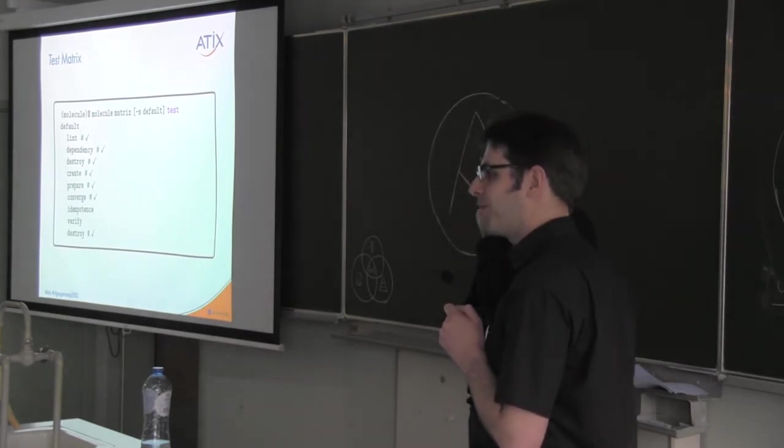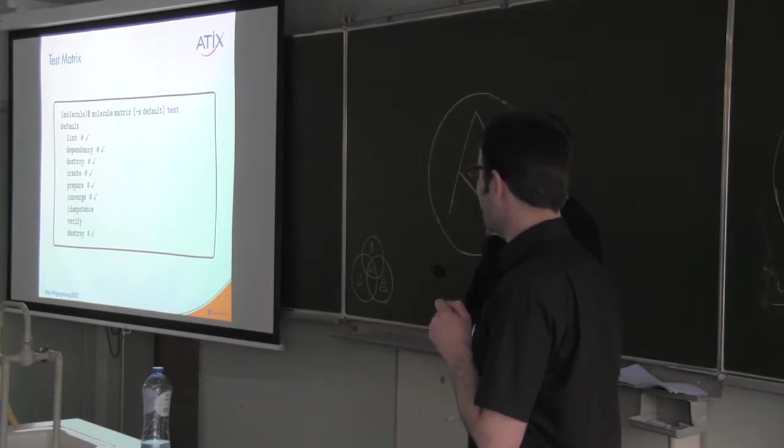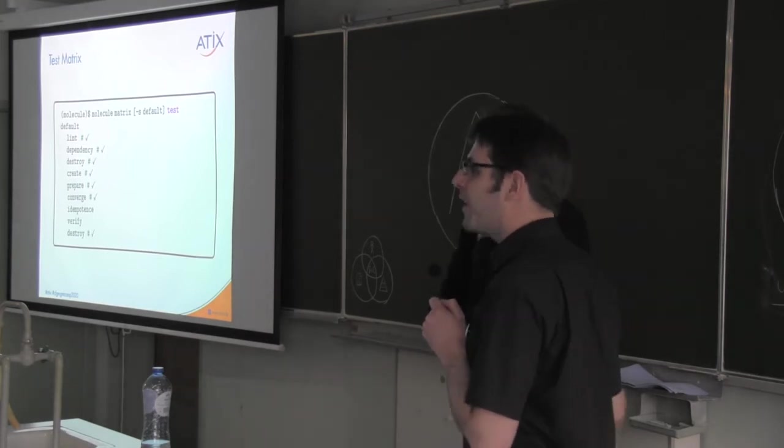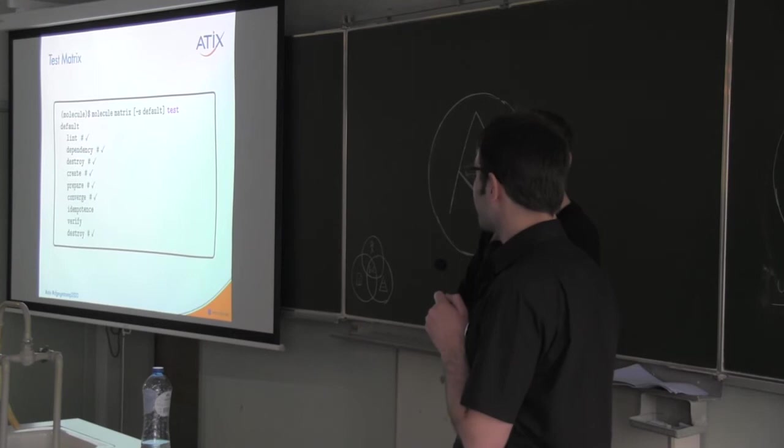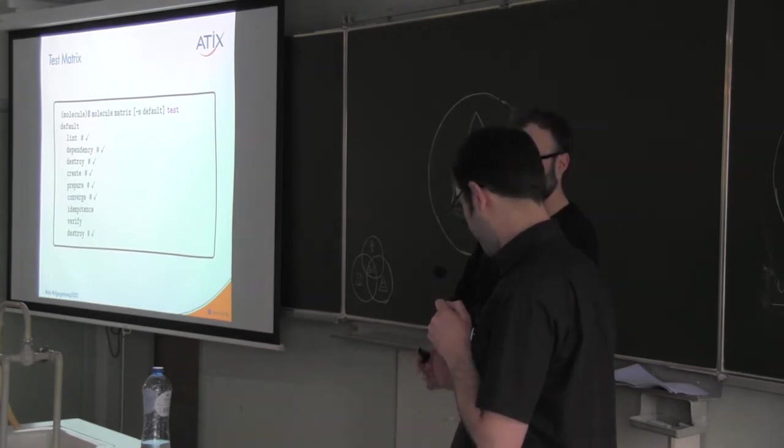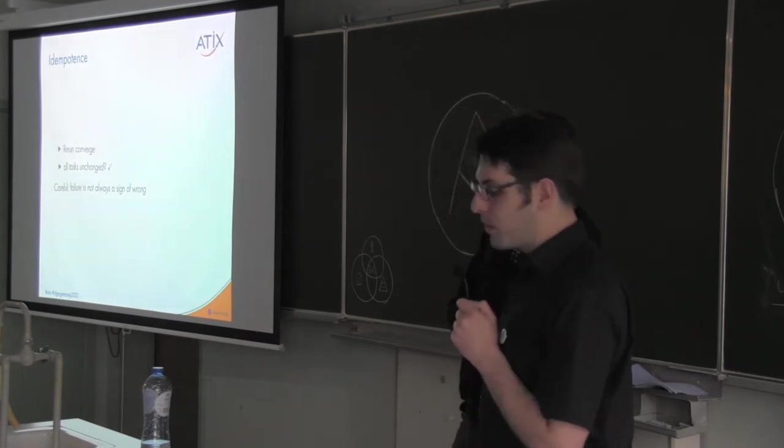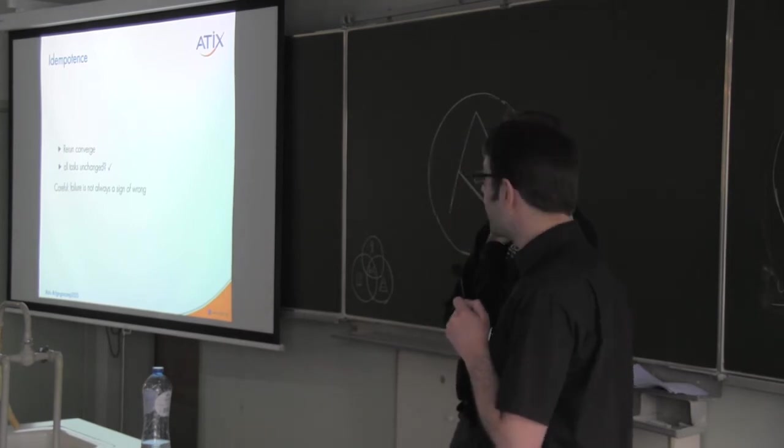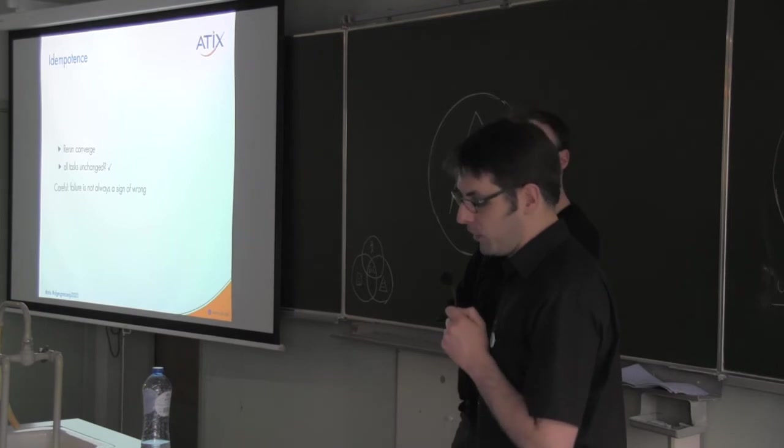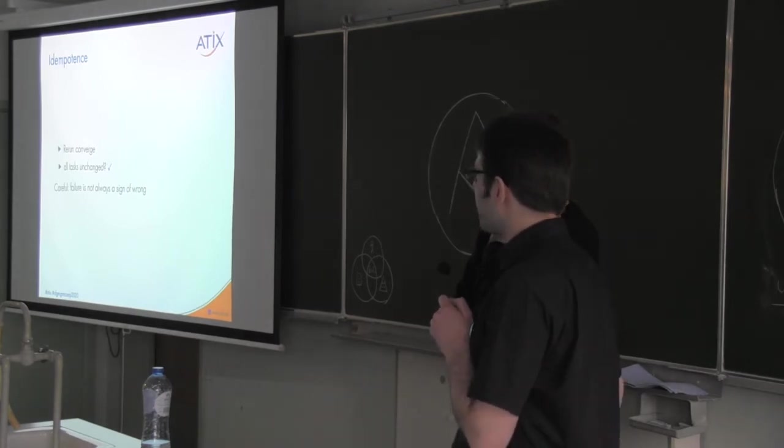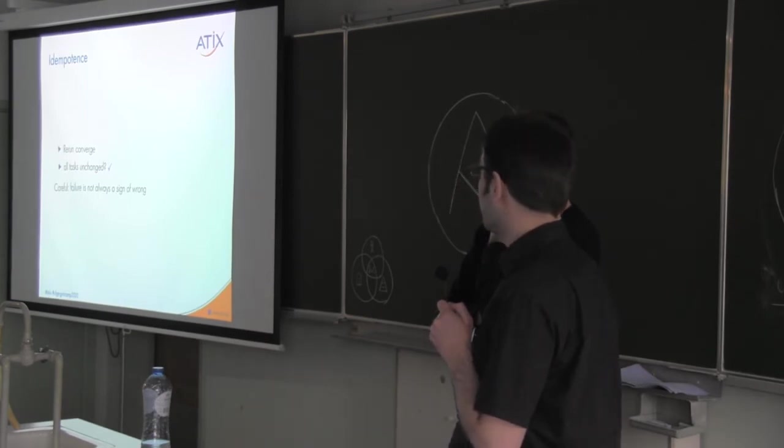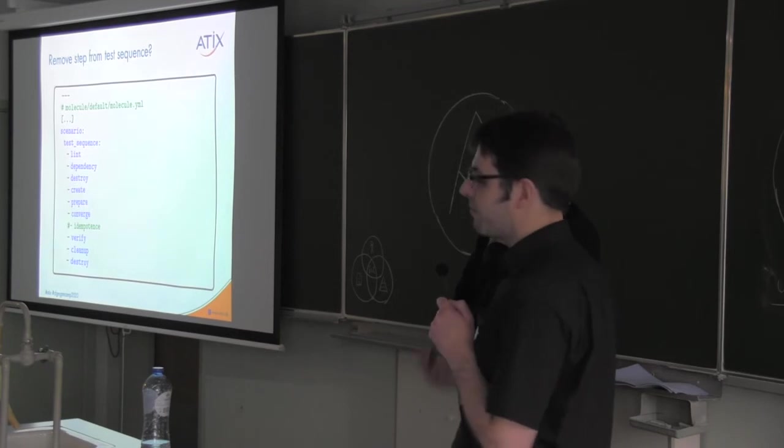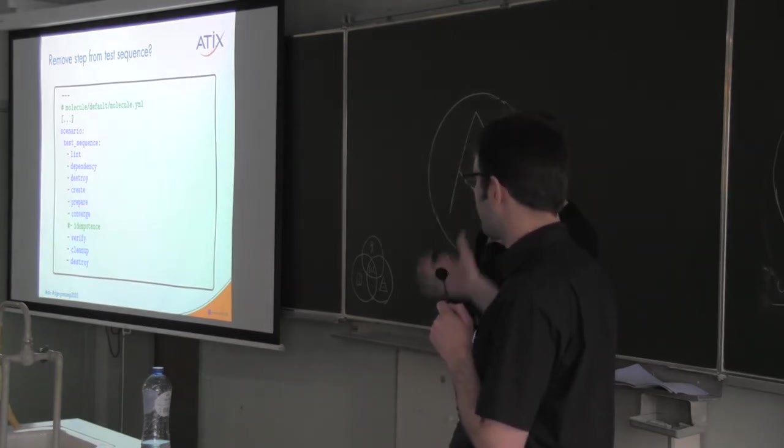What is idempotence? Idempotence means if you do the same thing twice, the result should be the same as after the first run. In Ansible, this means if you run the same tasks a second time, they report that they didn't change anything. So, what does it do? It reruns the converged playbook, and it checks whether anything reports a change. But be careful, this step might fail more often than you think, and this is not always a sign that the role is wrong. For example, if you just cannot go around it, you can skip it because you can specify what the test sequence is gonna be, and you can just skip the idempotence part.